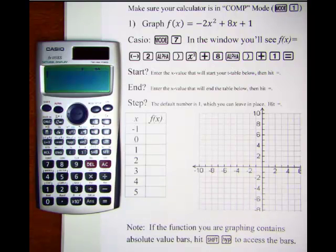Let's see how we would graph the function negative 2x squared plus 8x plus 1, which is a quadratic function. So we know that it is a parabola.